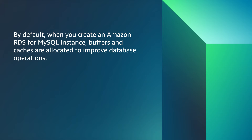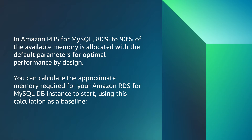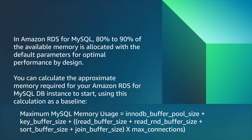By default, when you create an Amazon RDS for MySQL instance, buffers and caches are allocated to improve database operations. Amazon RDS for MySQL also has internal memory components, such as key buffer size or query cache size, that create internal temporary tables to perform certain operations. In Amazon RDS for MySQL, 80% to 90% of the available memory is allocated with the default parameters for optimal performance by design. You can calculate the approximate memory required for your Amazon RDS for MySQL DB instance to start using this calculation as a baseline.